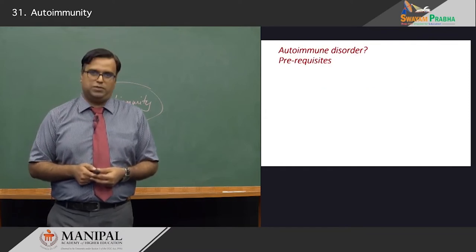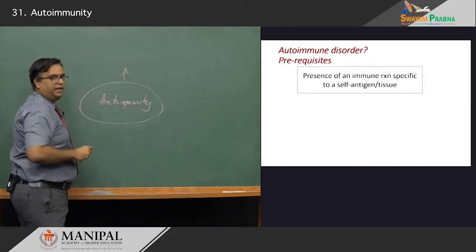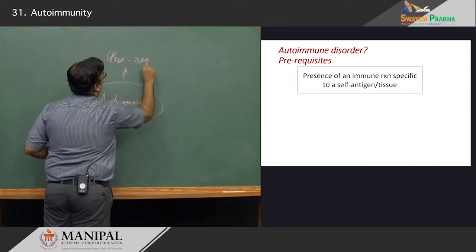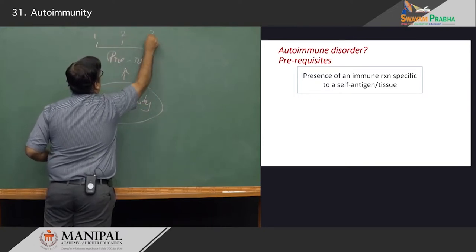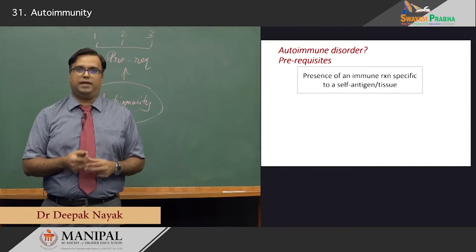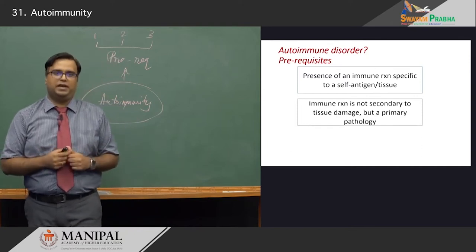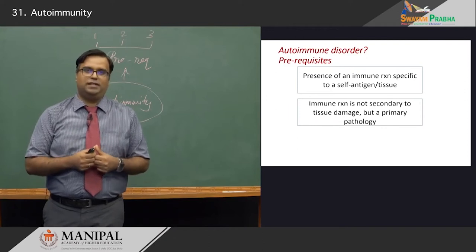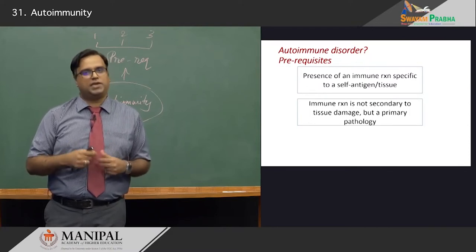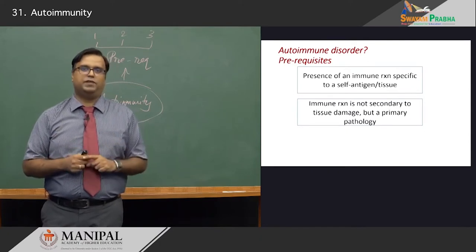There are certain prerequisites before you call something an autoimmune disorder. The most important one is the presence of an autoimmune reaction which is specific to a particular tissue or self-antigens. You have to serologically or histologically demonstrate that these autoantibodies are specifically targeting certain antigens. The second criteria is to demonstrate that this immune reaction is entirely primary — not secondary to tissue damage. As alluded to earlier, you can get tissue damage from wear and tear and an autoantibody response mounted against that — but that is not autoimmunity.